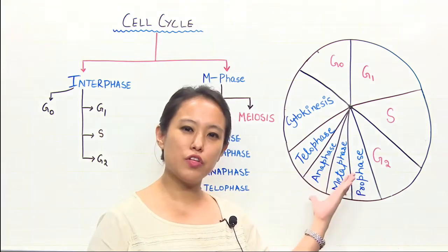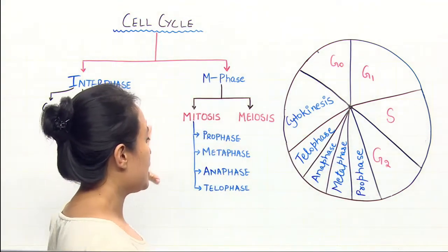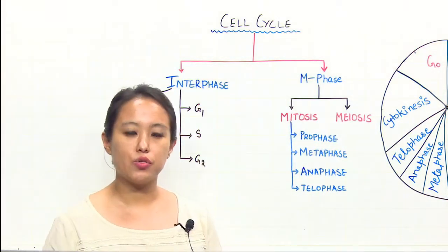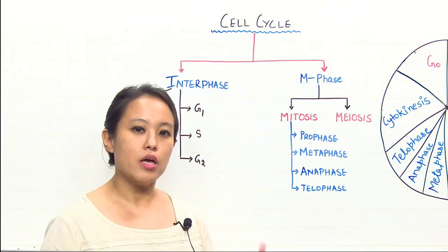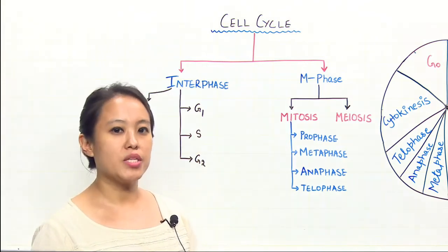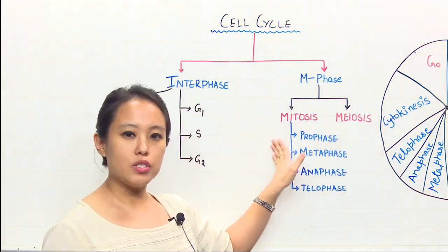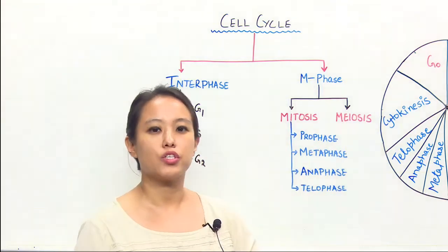I have given you just a brief review about it, so let's go forward with this. Cell Cycle is basically divided into two phases: interphase and M-phase. M-phase is categorized further into mitosis and meiosis. Mitosis is your equational division and meiosis is your reductional division.